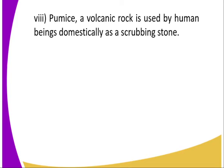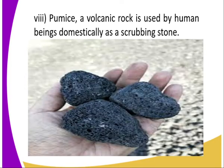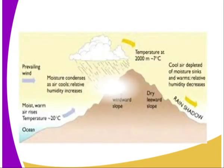Number eight, pumice is a volcanic rock — we said it is an example of extrusive rocks. It is used by human beings domestically as a scrubbing stone. This is an example of pumice; it is the one used for scrubbing legs. You can also see how rainfall is formed and how we get the rain shadow from volcanic mountains.